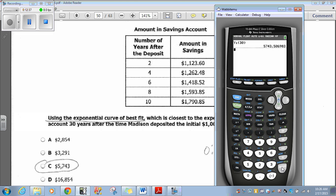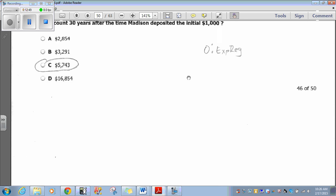choice C. I encourage you to watch that again, especially if your teacher hasn't shown you how to do this. Exponential curve of best fit, 5743. That's our answer.